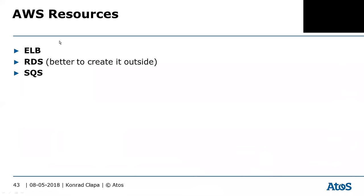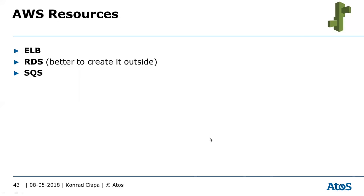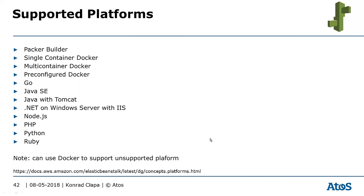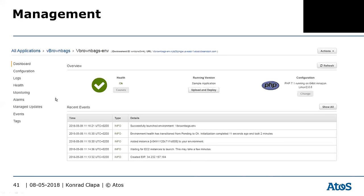AWS resources you can use include ELB, RDS, and SQS. One best practice is to create RDS outside of Beanstalk, because you can actually delete your database when deleting your environment. Create it outside and then attach it via Beanstalk commands.